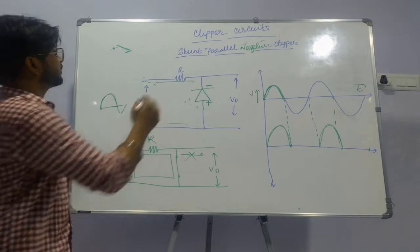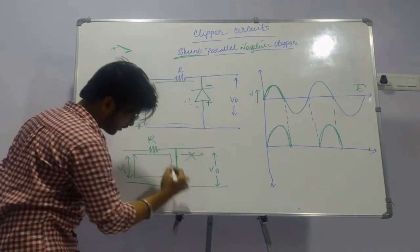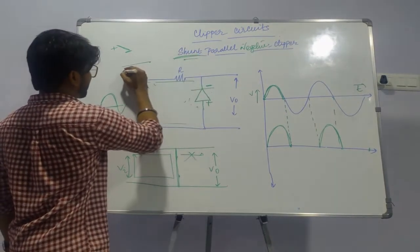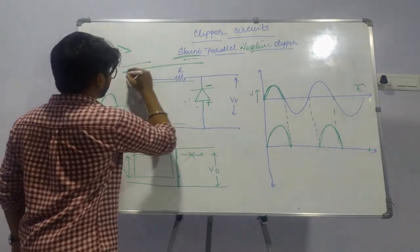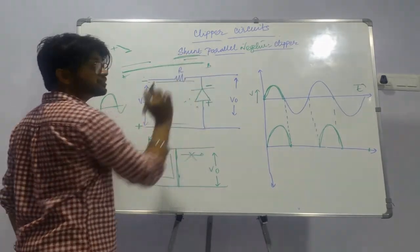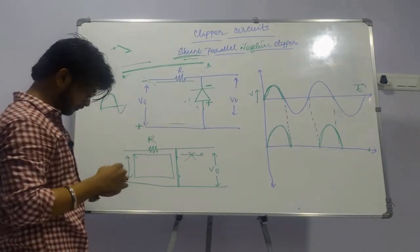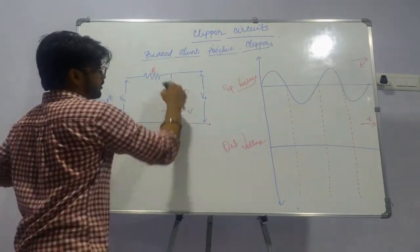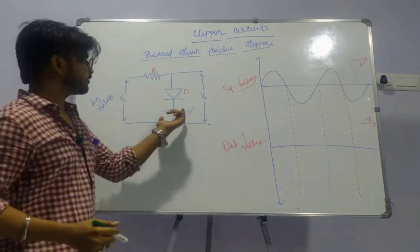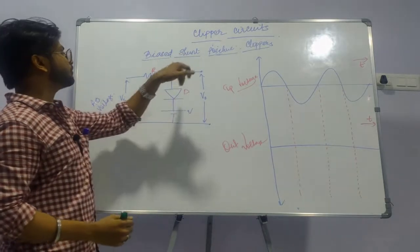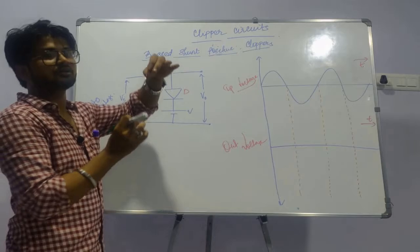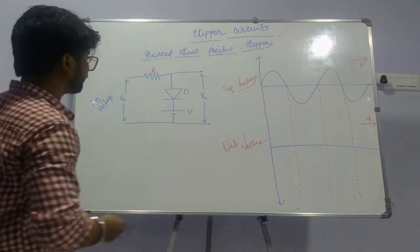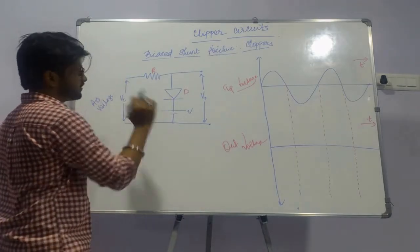A shunt means a closed circuit without any resistance — when two points A and B are connected without any resistance it is called a shunt. The biased shunt positive clipper has a DC voltage source present inside the circuit; sometimes it behaves as a closed circuit (shunt) and sometimes as an open circuit. Let's begin with the analysis of the working.